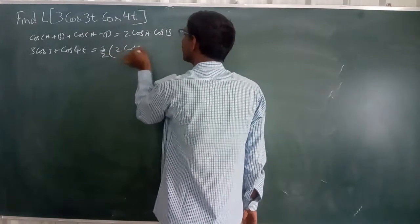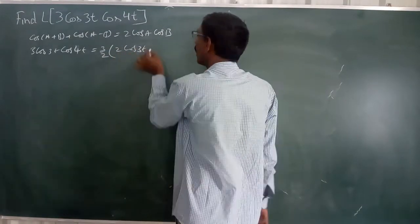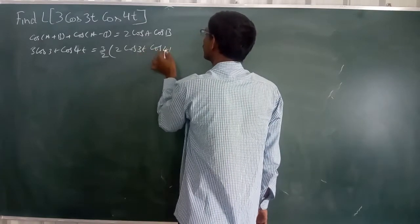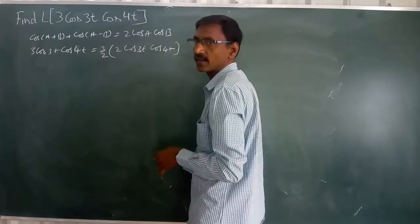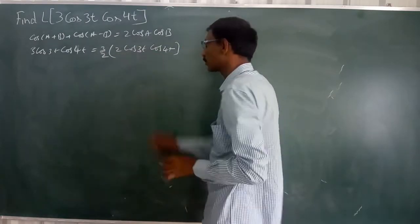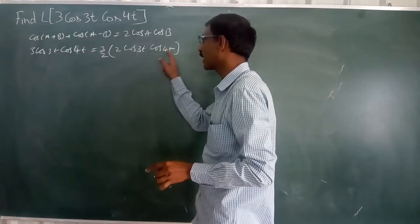Can I take? So, 2 cos 3 theta cos 4 theta. Can I write it down like this? 2 and 2 get cancelled again, we get that one only. Now this is in the form of 2 cos A cos B.